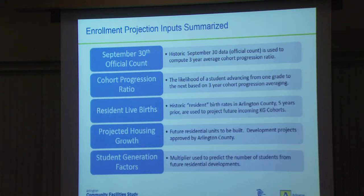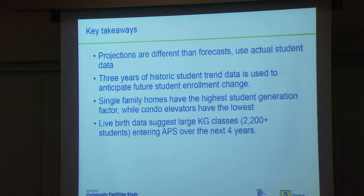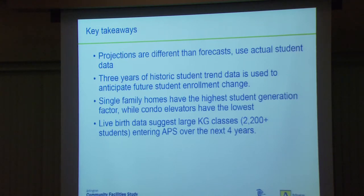Here's a summary of our enrollment projection inputs — you have that in your documents. Key takeaways: projections are different from forecasts, and at APS we use live births and real student data. We use three years of historic student trends to anticipate future enrollment change. Single family detached homes have the highest student generation factor while condo elevator units have the lowest. Live birth data suggests large kindergarten cohorts of 2,200 plus entering APS over the next four years.